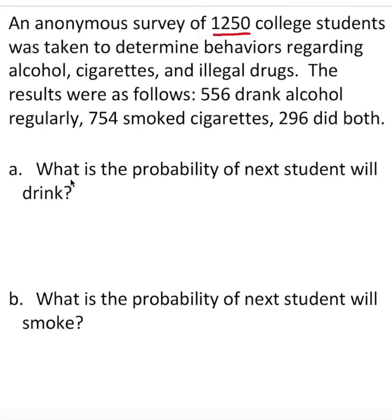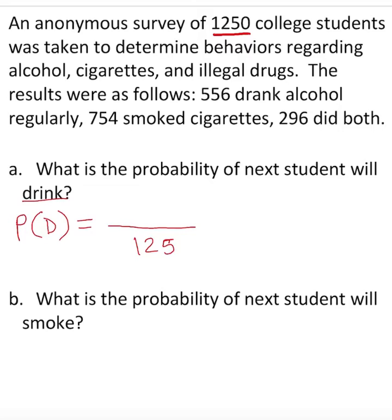The question is: what is the probability that the next student will drink? We always find probability as what we are looking for versus everything. I'm going to put notation here — probability of drink, P(D), where D stands for drink or alcohol. This is equal to the total, which is 1250, on the bottom.